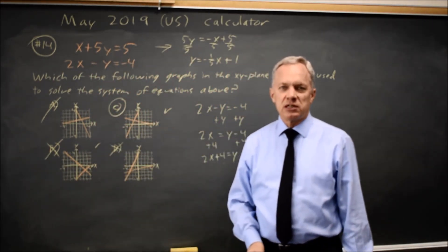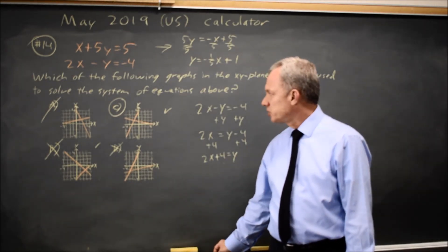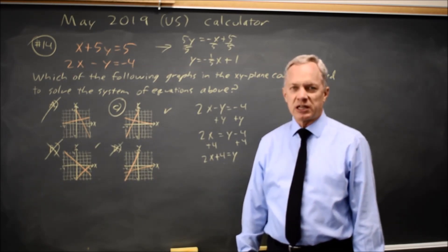The only one that could be correct is choice C, so that would be our answer. Very often on these, I prefer to cross out wrong answers until only one answer is left, and that must be right.